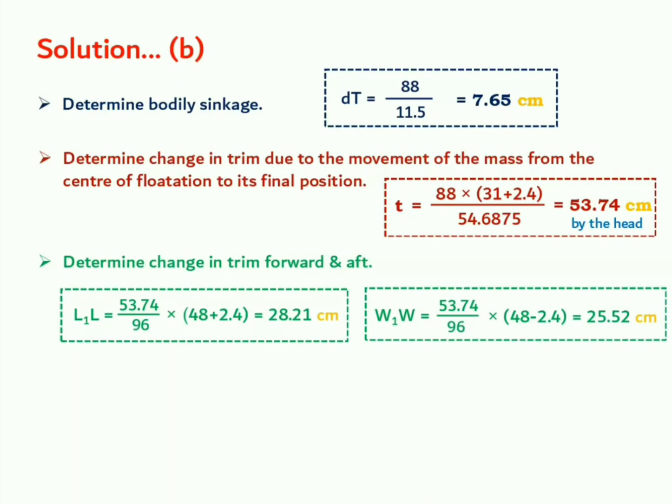Now change in trim aft and forward will be determined by the expressions as I studied earlier. Small t upon L into LF and small t upon L into WF. These are the expressions. F, L and WF distances will be determined. You see if you look at the diagram you will get to understand that we have to either add the value of 2.4 in half of ship's length or we need to subtract it in order to have the values of LF and WF respectively.